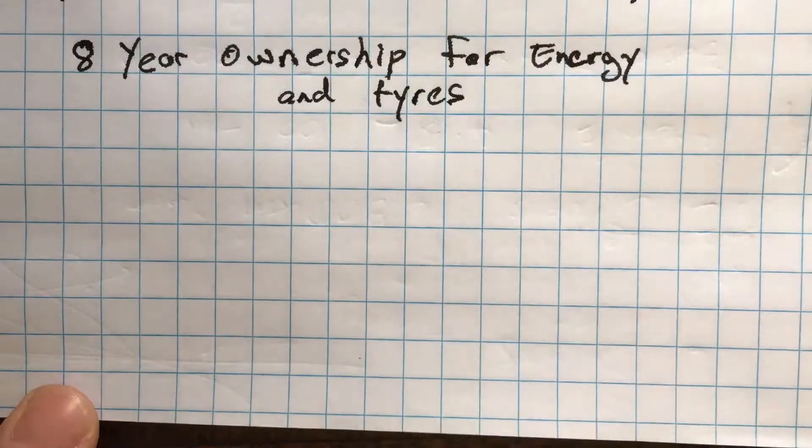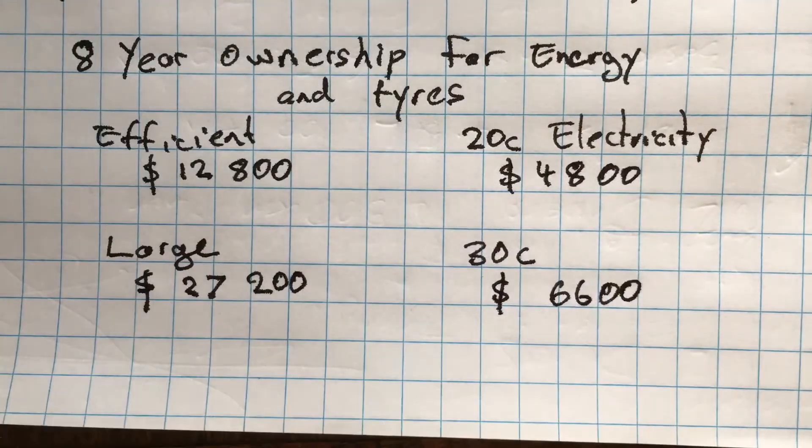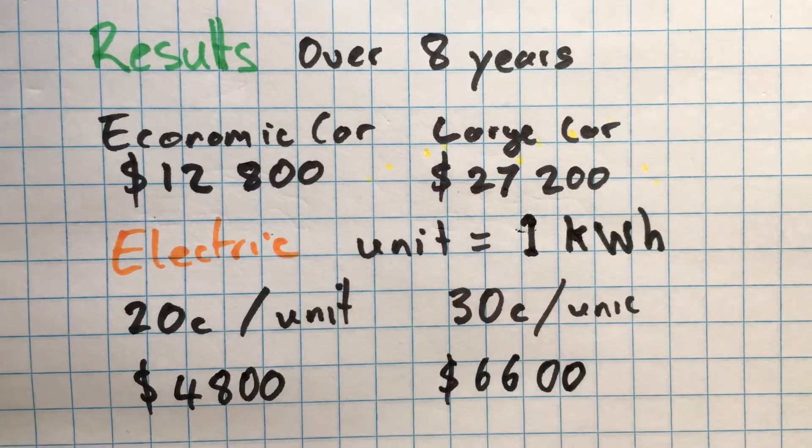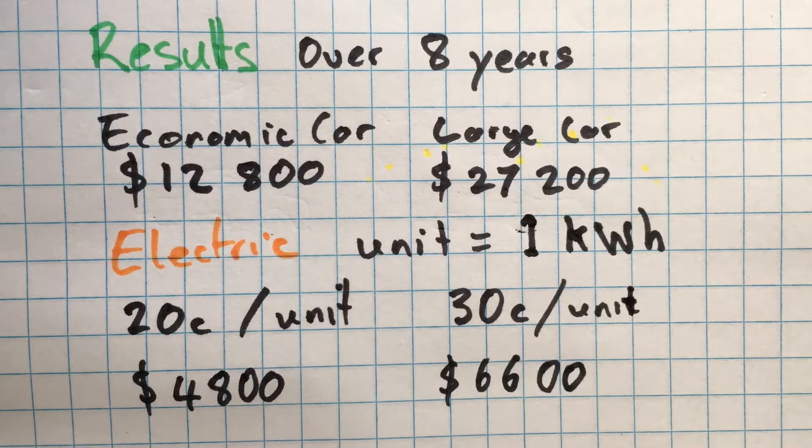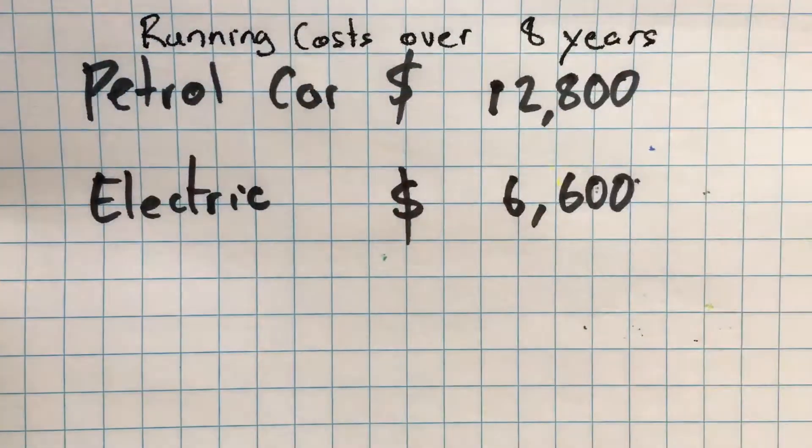Adding on the price of the tyres and multiplying, you'll get these results. A normal efficient car, an economic car, will be able to compare with an electric car. It turns out that it costs about exactly half the price for those running costs over eight years.